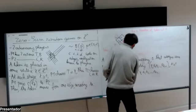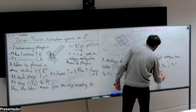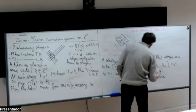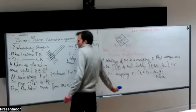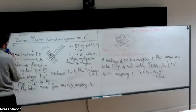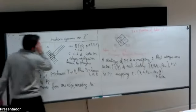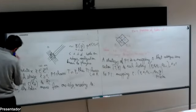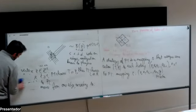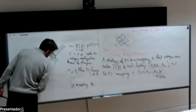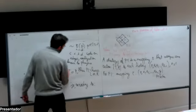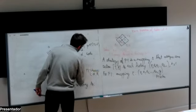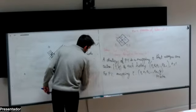For player two, it's almost the same, except that player two has an extra piece of information: he plays second, so he knows player one's action before choosing his own move.